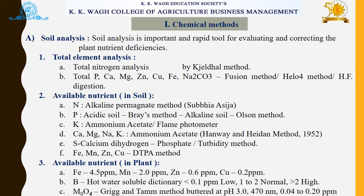The first approach under soil analysis is total elemental analysis. Total nitrogen analysis is done by the Kjeldahl method. Different nutrients like phosphorus, calcium, magnesium, and zinc are also analyzed. For available nutrients in soil, nitrogen is determined by the alkaline permanganate method given by Subbiah and Asija. Phosphorus is determined in acidic soil by the Bray method and in alkaline soil by Olsen's method. Potassium is determined by the ammonium acetate method on a flame photometer. Calcium, magnesium, sodium, and potassium are also determined by the ammonium acetate method. Sulfur is determined by the turbidity method, and micronutrients like iron, manganese, and copper are determined by the DTPA method.